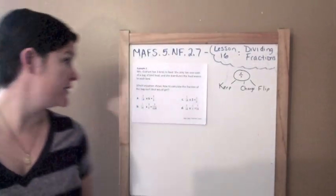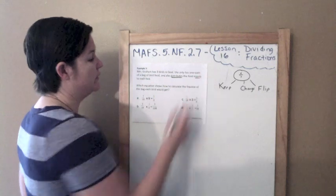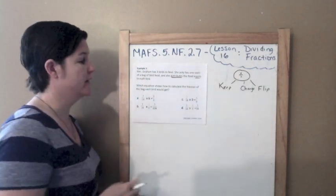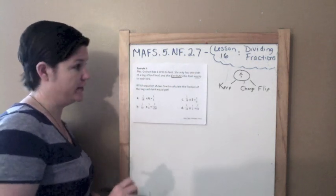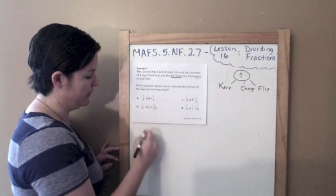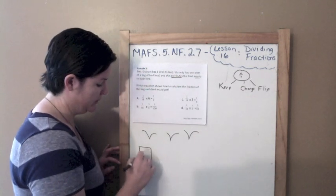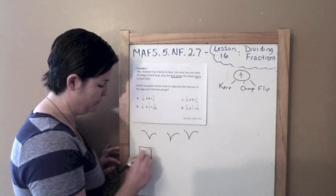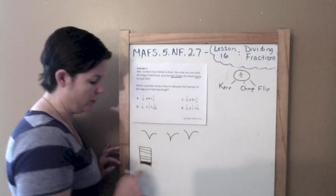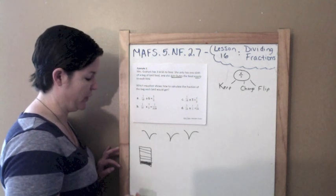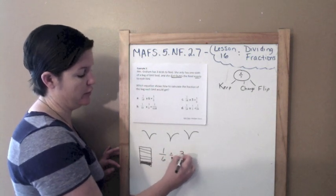Example 3: Mrs. Graham has 3 birds to feed. She only has 1/6 of a bag of bird food and she distributes the food evenly to each bird. 'Distributes evenly' is a nice way of saying divides. The question asks: which equation shows how to calculate the fraction of the bag each bird would get? So she has 3 birds to feed, but she only has 1/6 of a bag of food, and she needs to take what she has and divide it among each bird.